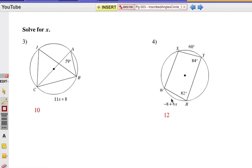Alright, 3 and 4. Number 3 is 10. That's solving for x. How did we get that? Alright, we look at this angle here where it's 59. And notice that that creates our arc CB, which is labeled 11x plus 8. Now, this is an inscribed angle, so if we double that, that's the measure of this arc.